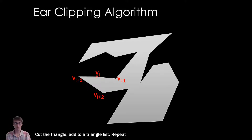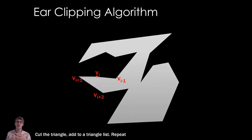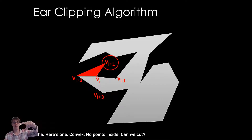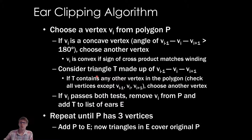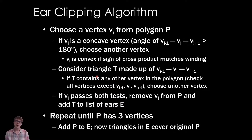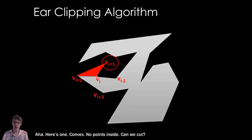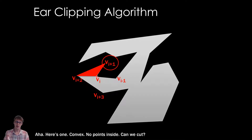Then I repeat the algorithm. If you do this, you'll get a list of triangles that you clip, clip, clip, clip off your polygon. When you're done, you'll have a list of triangles that reproduce your original shape. I remember this triangle — it's a good one. I clip it off and repeat. The ear clipping algorithm is a simple way to turn a polygon into a series of triangles.